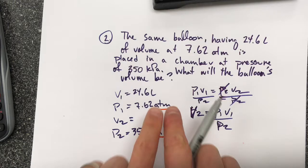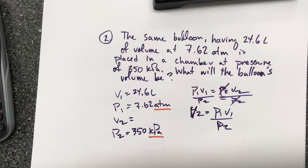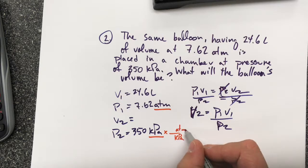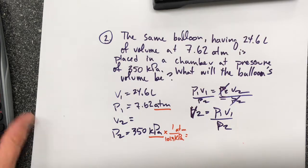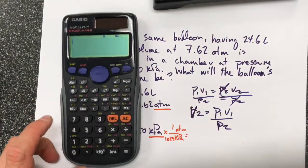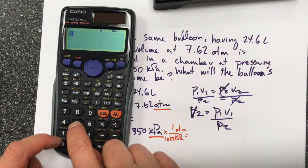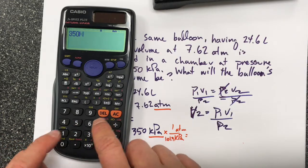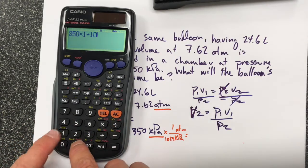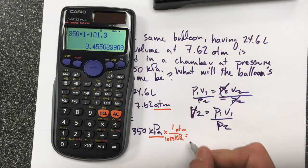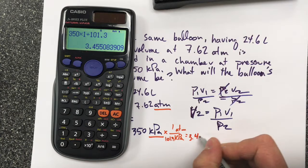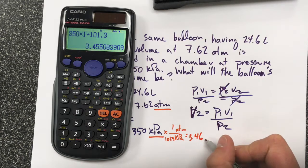But the challenge here is going to be that I do not have unit agreement here. So I either need to make this into atm or this into kPa so that the units will cancel out. I'm going to get rid of the kPa and be left with atm. So one atm is 101.3 kPa. If you don't know how to do that, you need to watch the video on pressure conversion. So I take 350 times 1 divided by 101.3, and I get 3.46 kPa.